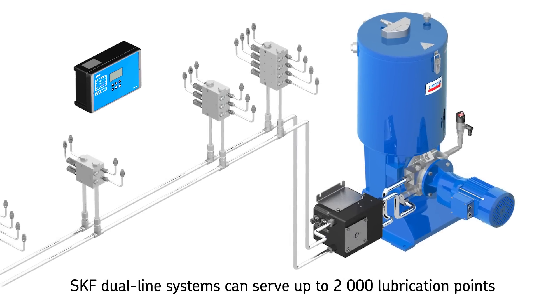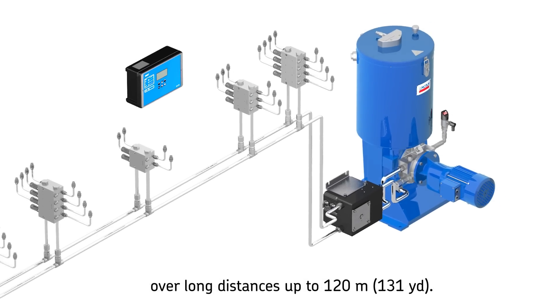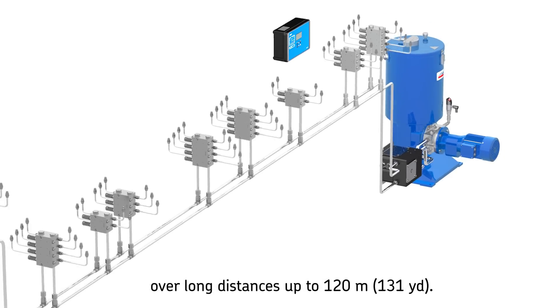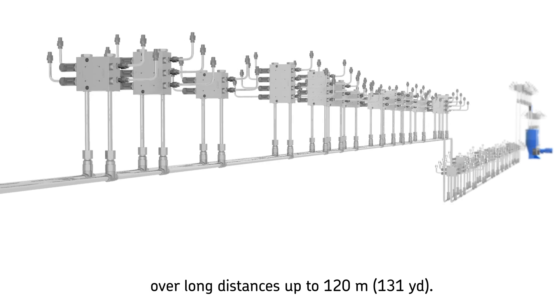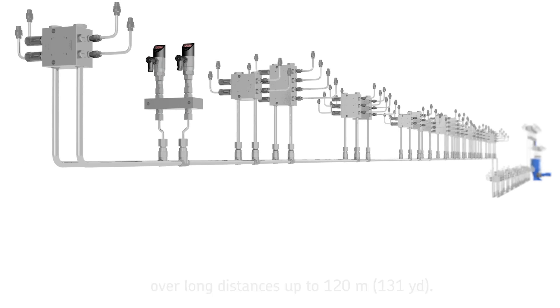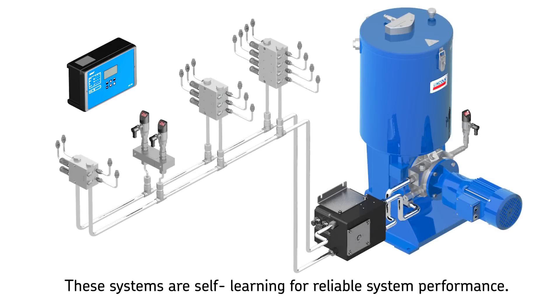SKF offers dual-line systems that can dispense a precise metered amount of lubricant to up to 2,000 lubrication points over long distances up to 120 meters (131 yards) and more, depending on case values. SKF dual-line systems feature smart electronic components which allow the system to do self-learning for optimized and reliable system performance.